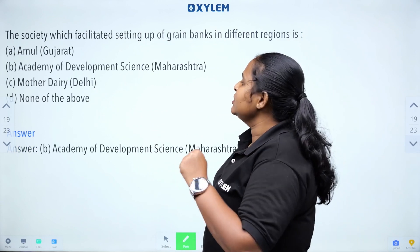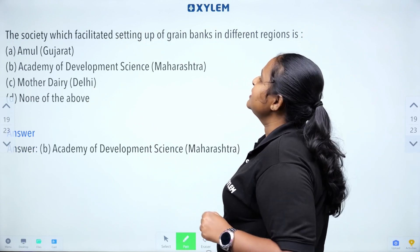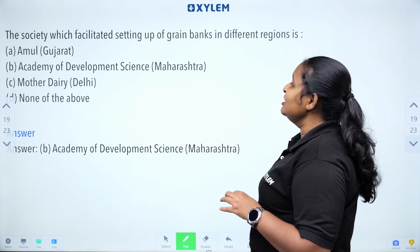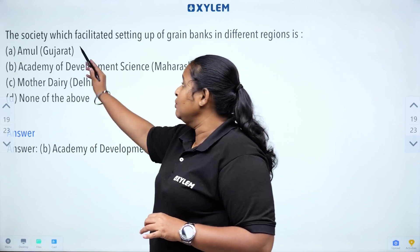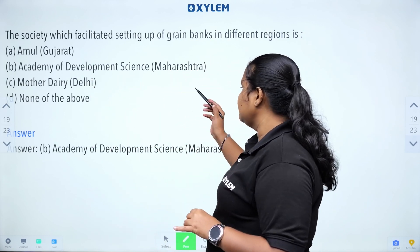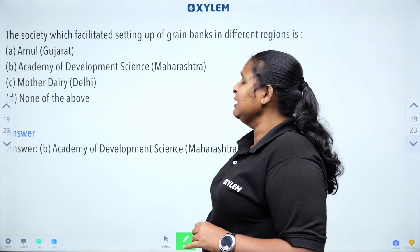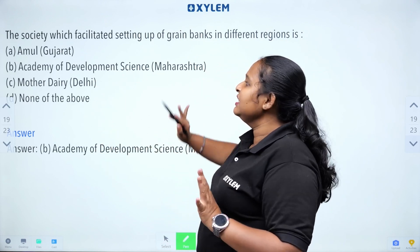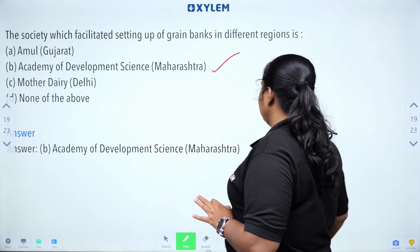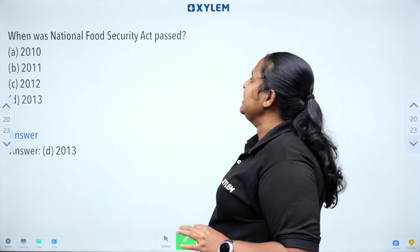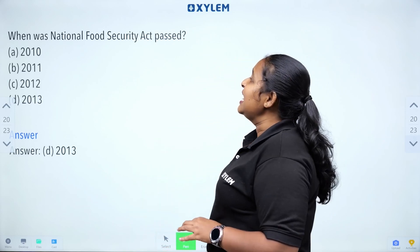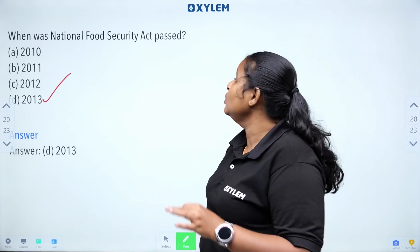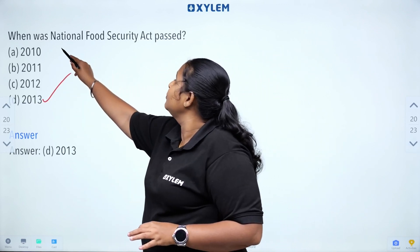The society which facilitated setting up of grain banks in different regions — the answer is the Academy of Development Sciences in Maharashtra. Name the cooperative that provides milk and vegetables, with trade decided by the government of Delhi. When was the National Food Security Act passed? It was passed in 2013.